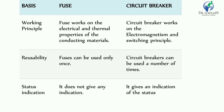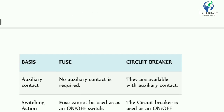For the indication parameter, we can get an indication whether current is flowing through it or not. After that, regarding auxiliary contact — no auxiliary contact is required in the case of a fuse, whereas the circuit breaker is available with auxiliary contact.